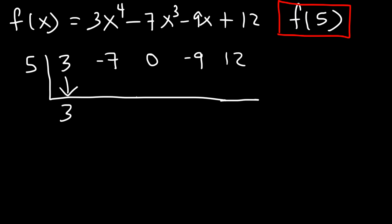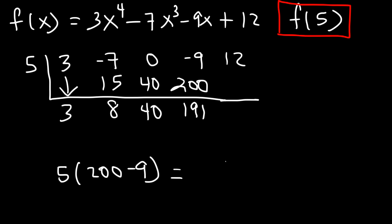So let's bring down the 3. 5 times 3 is 15. And negative 7 plus 15, that's going to be 8. And then 5 times 8 is 40. Let's bring down the 40. And then 5 times 40 is 200. Negative 9 plus 200 is 191. Now what's 5 times 191? 191 is basically 200 minus 9. 5 times 200 is 1,000. And 5 times 9 is 45. So 1,000 minus 45, that's 955.